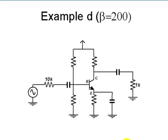Let's work now on example D on a transistor with a beta of 200. But before doing that, let's review some things.